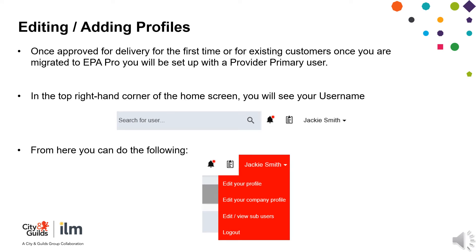Editing and adding profiles. Whether you are migrating onto EPA Pro or a brand-new customer, you will be set up with a provider primary user. In the top right-hand corner of the dashboard, you will see your username. From here, you can edit your profile, edit your company profile, edit and view sub-users, and log out. Only primary users can create sub-users. However, once created, all users have the same permissions.